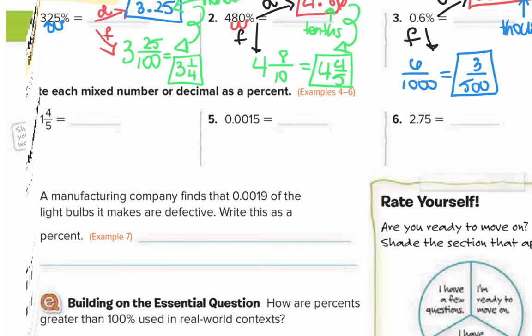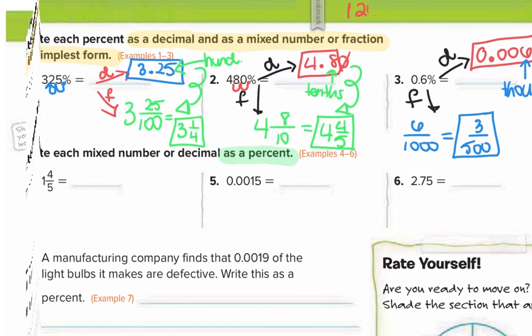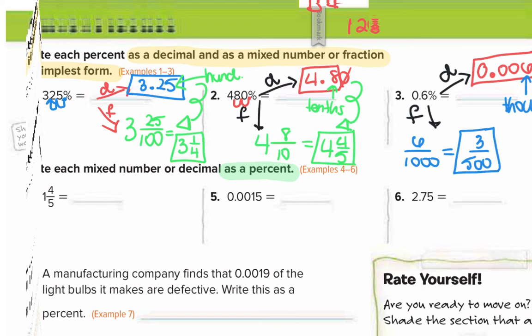For numbers 4 through 6, the directions say write each mixed number or decimal as a percent. Now we want all answers to be percents. We want to make these into decimals because once they're decimals, we can use the shortcut rule - moving the decimal two to the right.